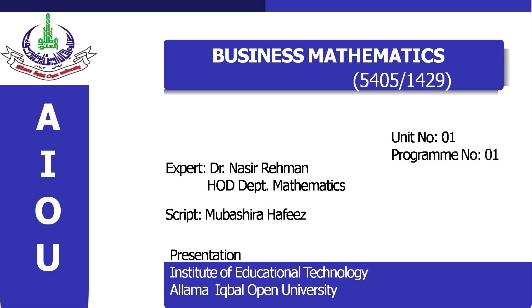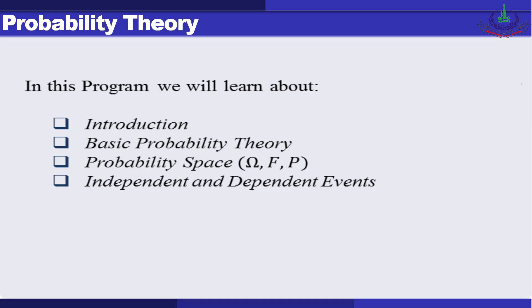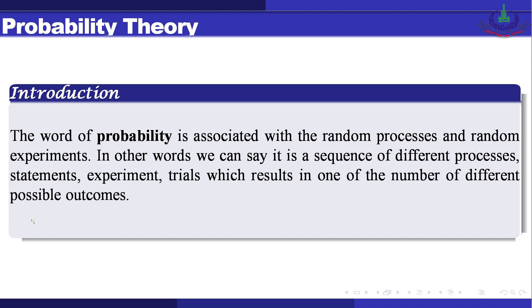Assalamu alaikum. I am your host Dr. Nasir Rahman, Associate Professor and Chairman, Department of Mathematics, Allama Iqbal Open University, Islamabad. Today you will listen to the first program of the series about Unit Number One. In this program we will discuss introduction, basic probability theory, probability space — what is omega, what is F, and what is P — and lastly types of events including independent and dependent events.